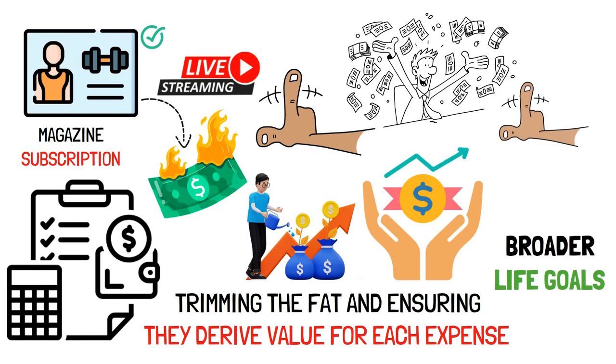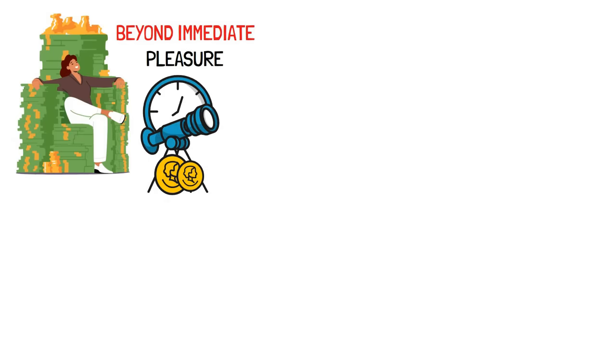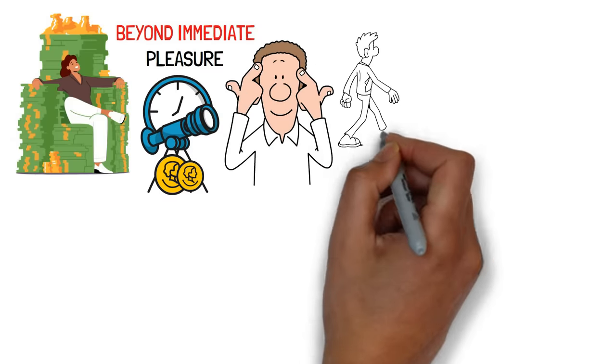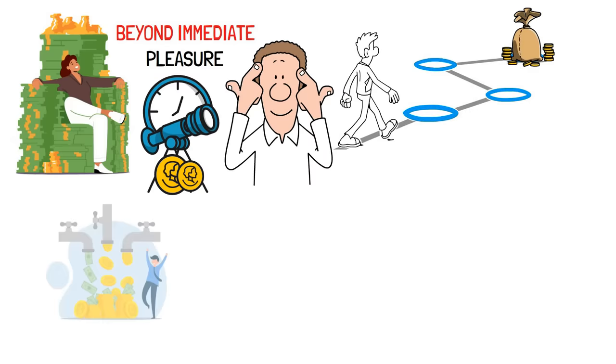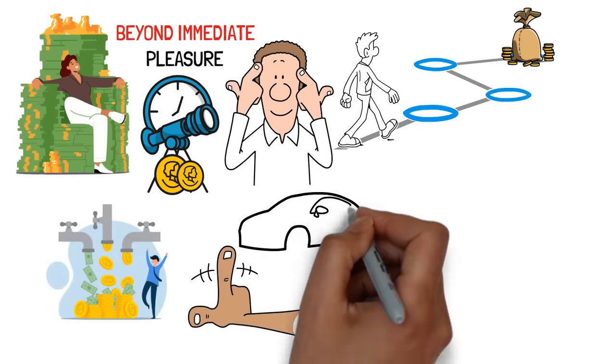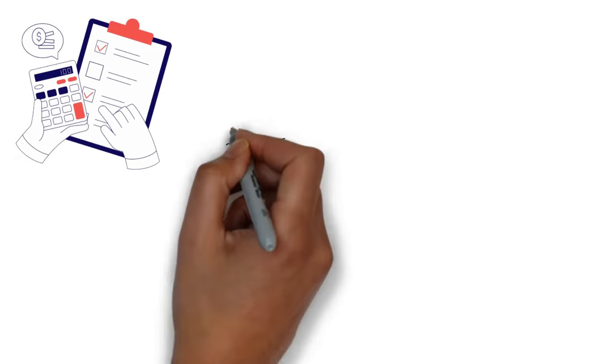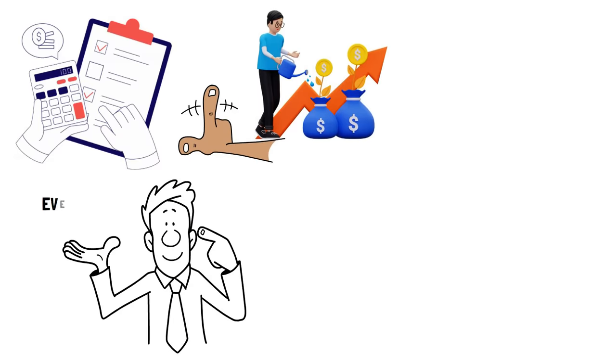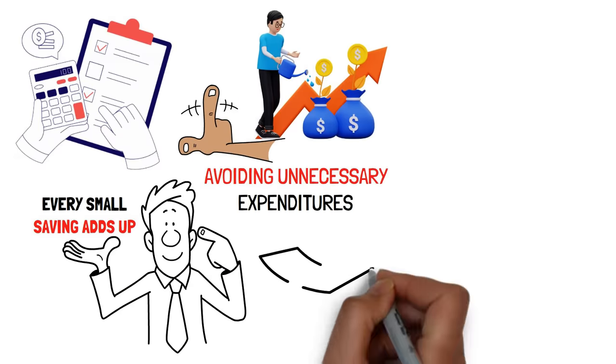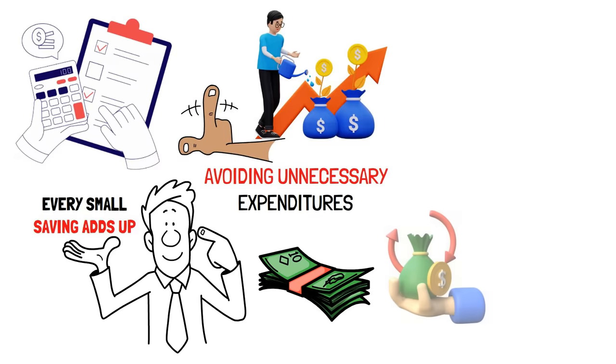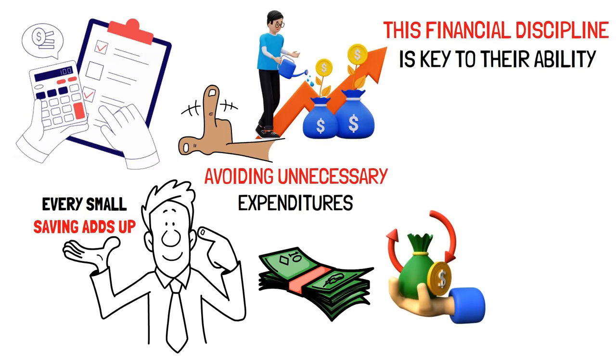The secret to sustaining wealth lies not just in earnings, but in savings and intelligent spending. The wealthy navigate through life with a different perspective on money, seeing beyond immediate pleasure and convenience, and focusing instead on long-term value and growth. By understanding and adopting these principles, you too can start on a path toward financial stability and wealth preservation. It's all about the intelligent allocation of resources. They are highly strategic about their personal and business finances, frequently reviewing and adjusting their budgets to reflect their actual usage and needs. This proactive approach not only minimizes wastage, but also enhances their ability to invest in opportunities that promise greater returns. This financial discipline is key to their ability to effectively maintain and grow their fortune.